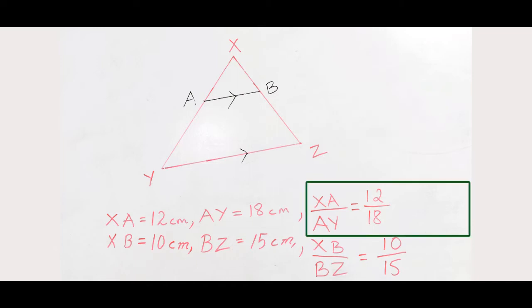So if you look at XA by AY, if you look at this ratio, we can reduce this ratio to the simplest form by dividing the numerator and denominator by the HCF, the highest common factor, or by dividing 12 and 18 by the highest number which can divide them both, and that number is 6. So here, 12 divided by 6 is 2, 18 divided by 6 is 3, so the ratio becomes 2 by 3.